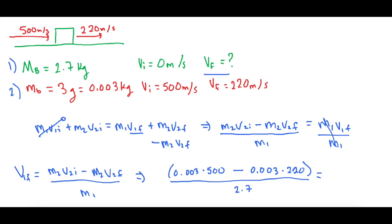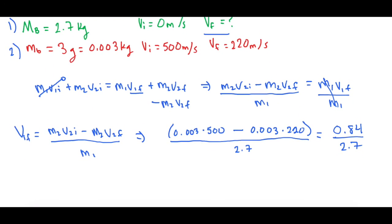So the top number gives us 0.84 kilograms times meters per second, all over 2.7. And that gives us our final answer,